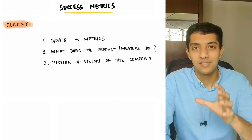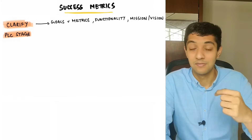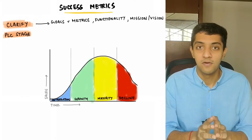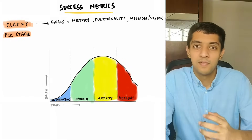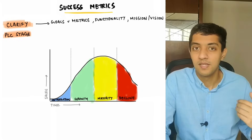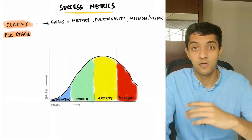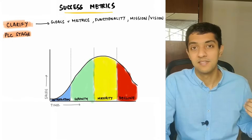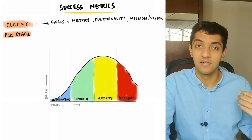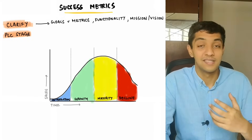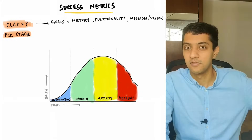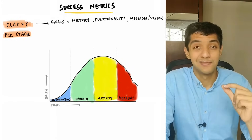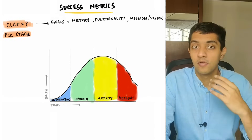Step two is to think about what stage in the product lifecycle the company is in. Based on this stage, the goal the company will optimize for will be different. For example, if the company is one or two years old, it's probably in its growth phase and wants to optimize for adoption and acquisition over metrics like revenue and monetization. If the company is older, the phase to optimize for is likely engagement rather than acquisition. You need to define which phase the company is optimizing for and focus on that.